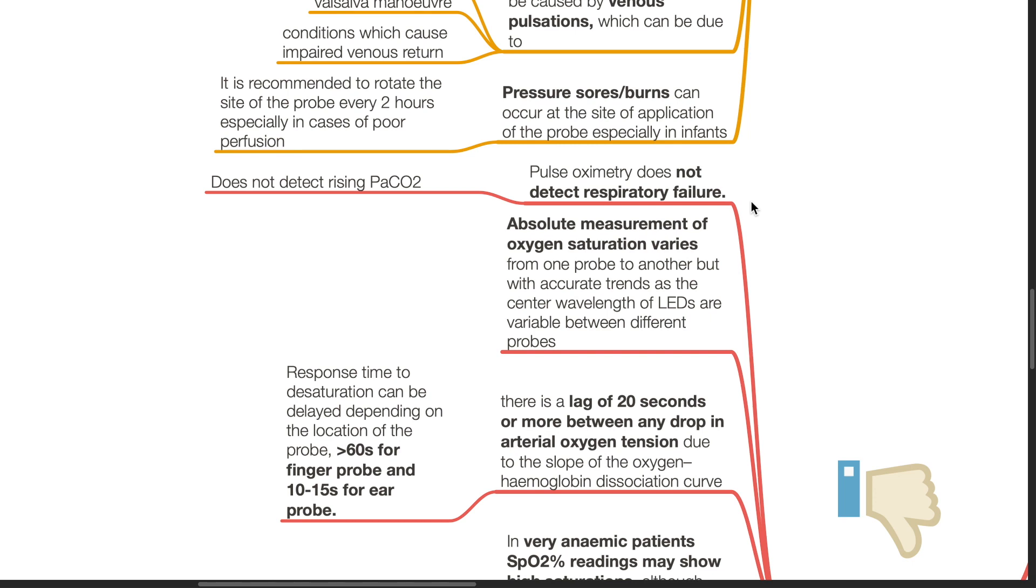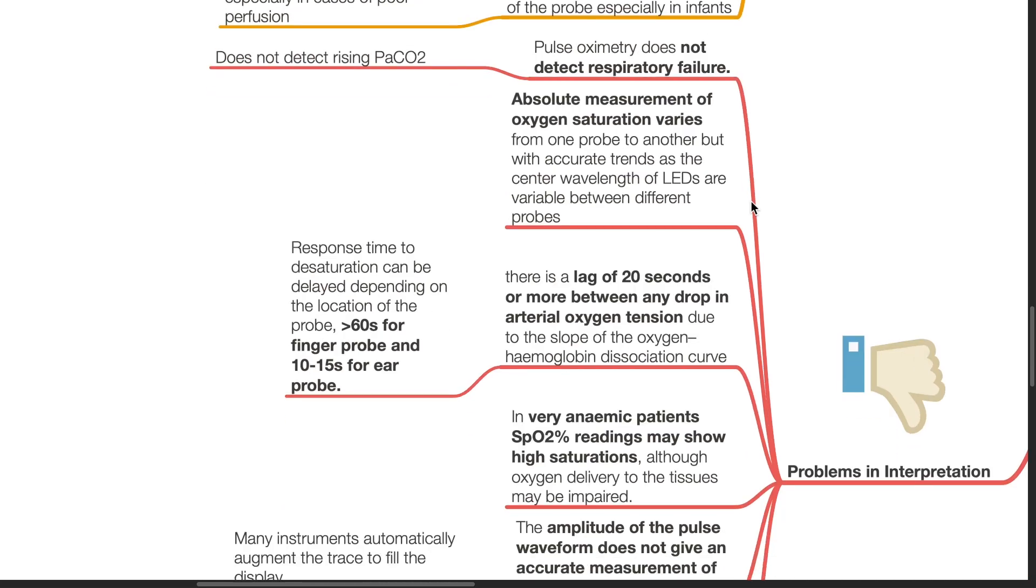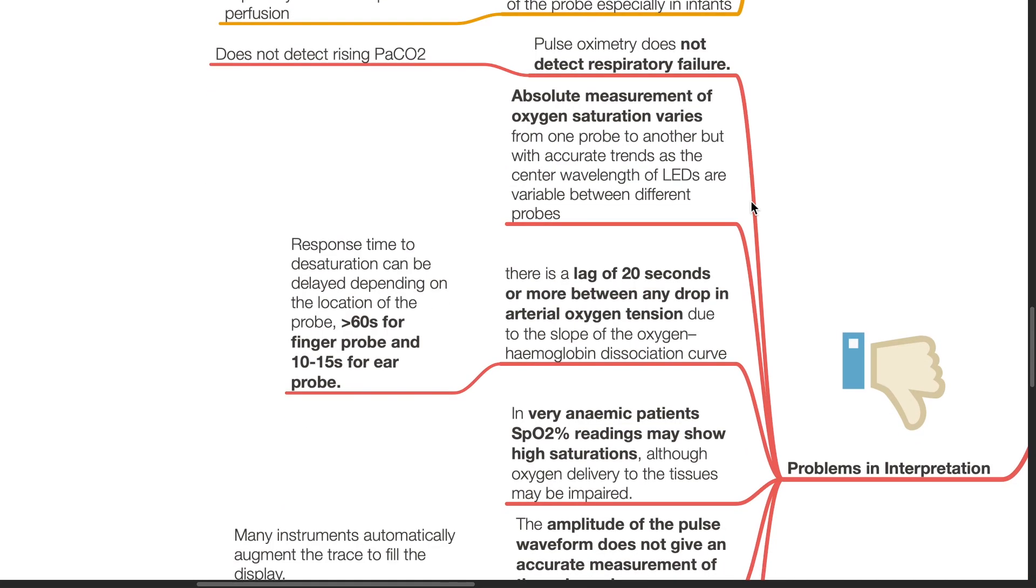The absolute measurement of oxygen saturation varies from one probe to another but with accurate trends as the center wavelength of LEDs are variable between different probes. There is a lag of 20 seconds or more between any drop in arterial oxygen tension due to the slope of the oxygen hemoglobin dissociation curve. The response time to desaturation can be delayed depending on the location of the probe. It can be more than 60 seconds for a finger probe and 10 to 15 seconds for an ear probe.